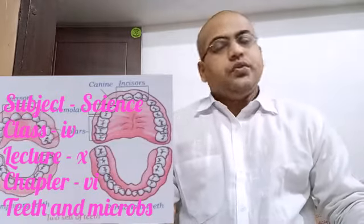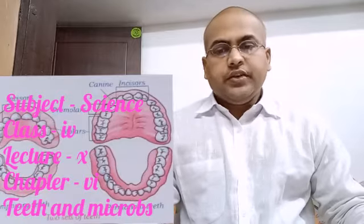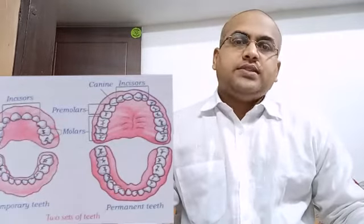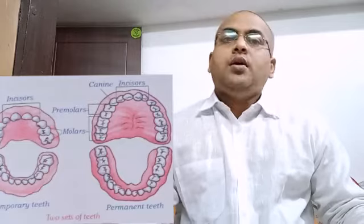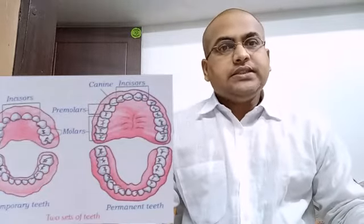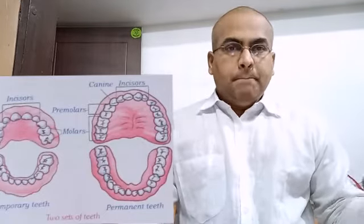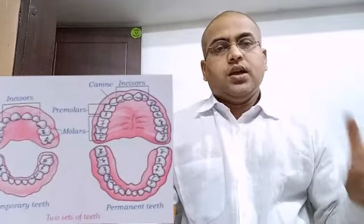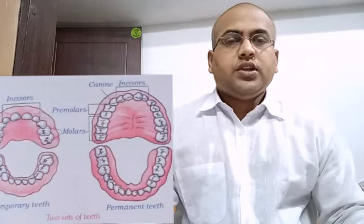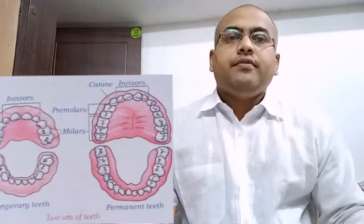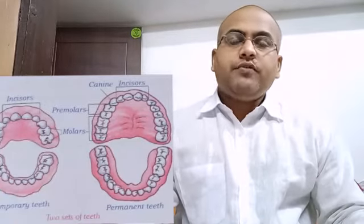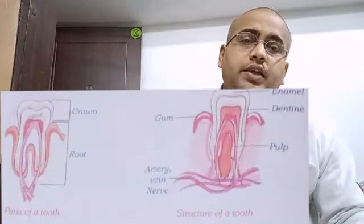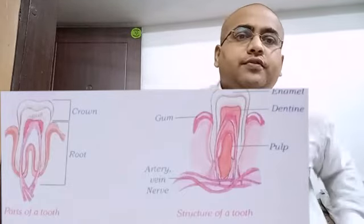Question number one: Name the different kinds of teeth and state their function. We have four kinds of teeth: number one, incisors; number two, canines; number three, premolars; and number four, molars. The function of incisors is biting the food. The function of canines is tearing the flesh. The function of premolars is crushing the food. The function of molars is to chew and grind the food properly.